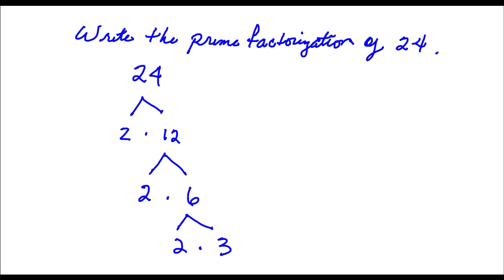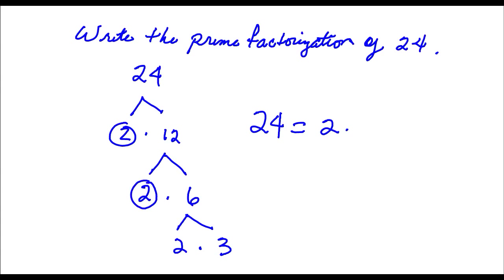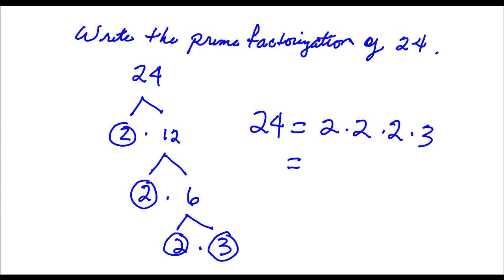So the prime factorization of 24 is 2 times 2 times 2 times 3. Or if you choose, you can write 24 as 2 to the third, because you have 3 factors of 2, times 3.